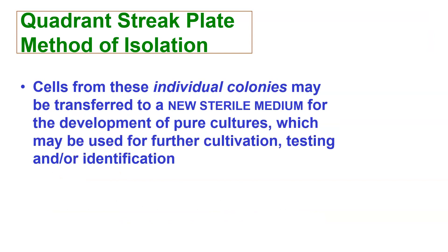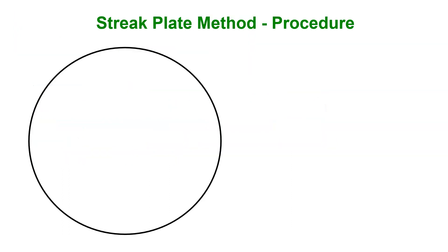When we deal with the quadrant streak method, cells from these individual colonies may be transferred to a new sterile media for the development of pure cultures, which we can then use. Here's your procedure.